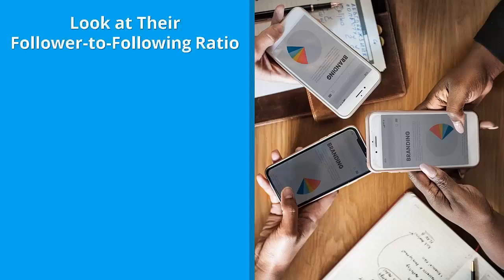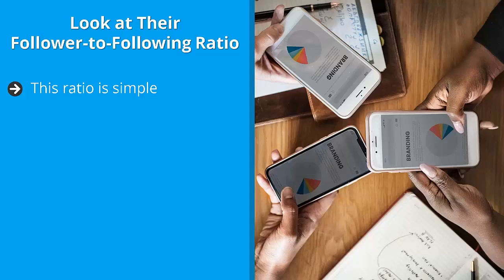Look at their follower-to-following ratio. This ratio is simple: look at the number of people this person follows and look at the number of people following this person. If this person's followers greatly outnumber the accounts they're following, chances are this is a real account.